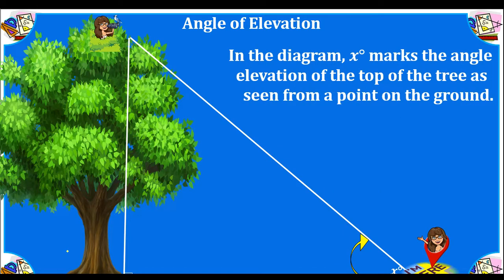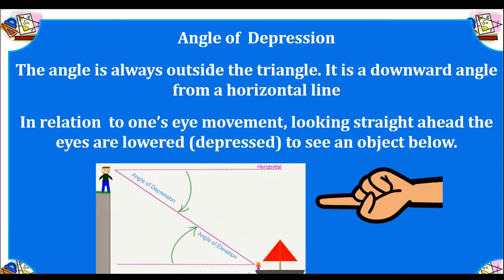In this diagram, X marks the angle of elevation of the top of the tree as seen from a point of view on the ground. The angle of elevation: we look straight forward and then we look up to see the gal in the tree, and that creates an angle of elevation.